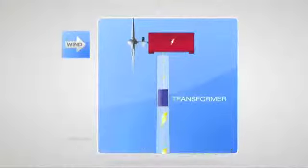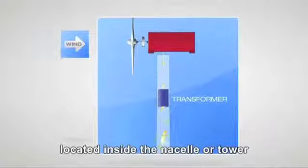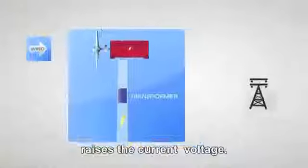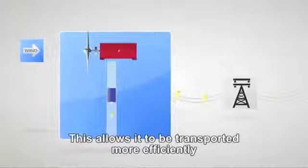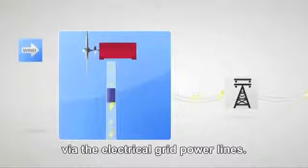Subsequently, a transformer located inside the nacelle or tower raises the current voltage. This allows it to be transported more efficiently via the electrical grid power lines.